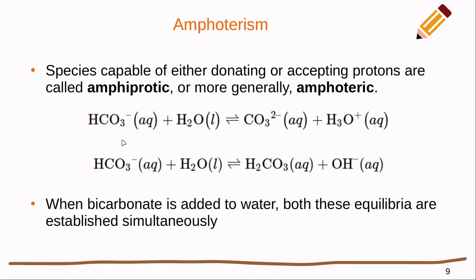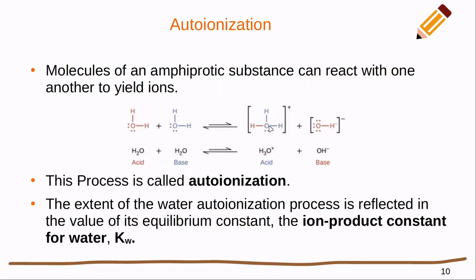One amphiprotic example is the bicarbonate ion. It can give a proton to water and become the carbonate ion, or it can accept a proton from water and become carbonic acid. When bicarbonate is added to water, both of these equilibria are established, just to different degrees depending on the K values for those reactions. The classic amphiprotic example is water itself: one water molecule acts as an acid, the other as a base, and they dissociate into a hydronium ion and a hydroxide ion. This process is called auto-ionization.